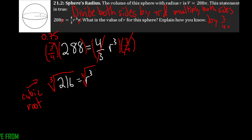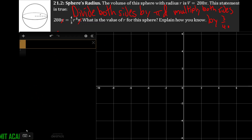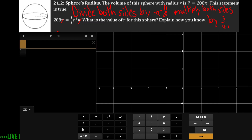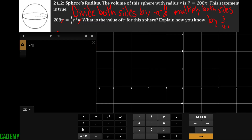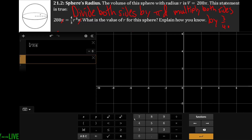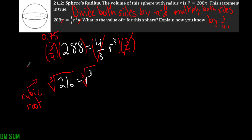On Desmos, open the keypad, go to Functions, and scroll to the bottom where there's a root symbol with an n — replace n with 3 for the cube root. Entering the cube root of 216 gives 6, because 6 to the power of 3 equals 216. So r equals 6 units.